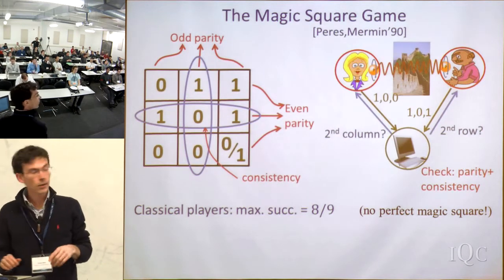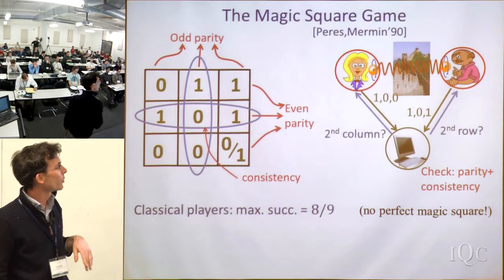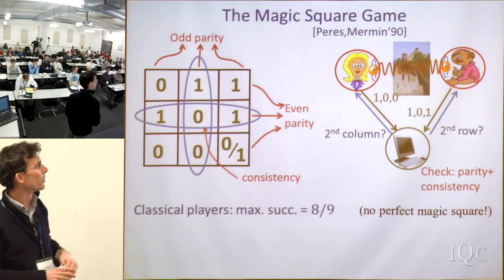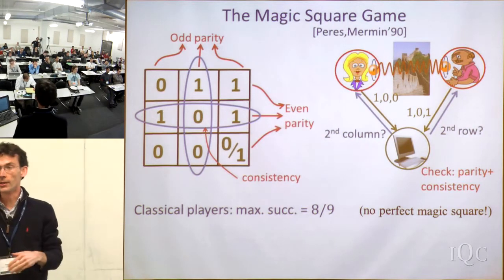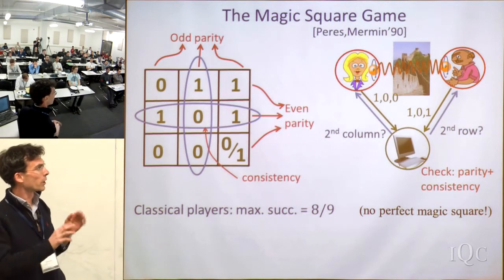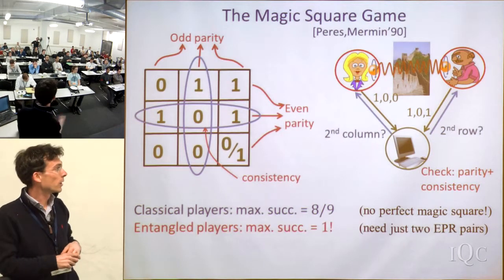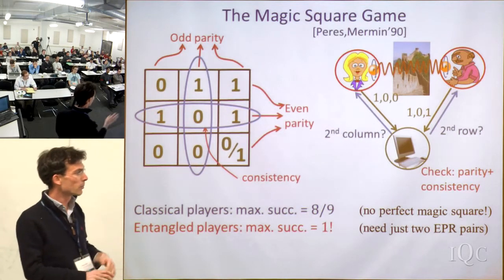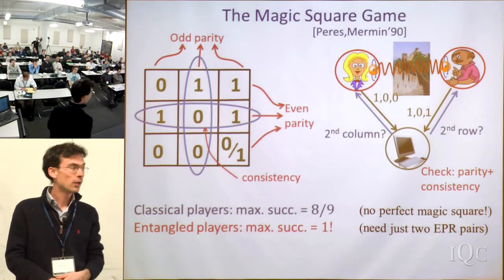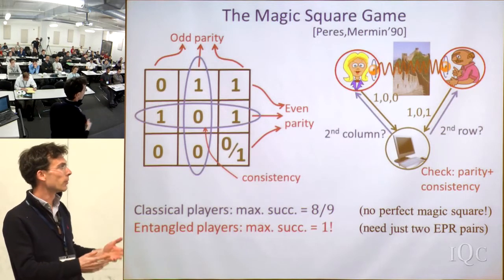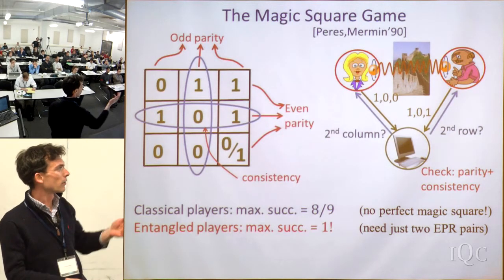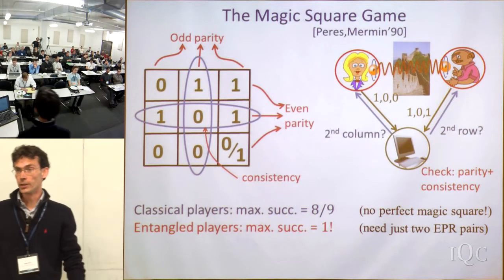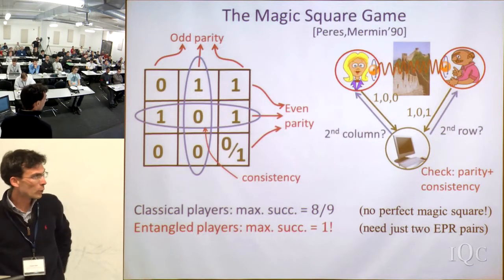So why is it interesting? If you allow a little bit more power to the players — now you allow them to be quantum — the game is exactly the same, but you give them the ability to use an entangled state. That doesn't let them communicate, but now they can get more correlations. Now they can win the game with probability one. There's a perfect strategy — it's actually very simple, based on using two EPR pairs. Alice and Bob each receive their question, make a measurement on their halves of the EPR pairs, get an outcome, send that back, and it satisfies all the constraints.